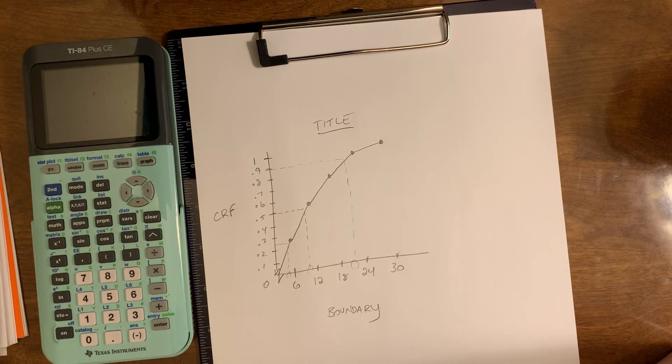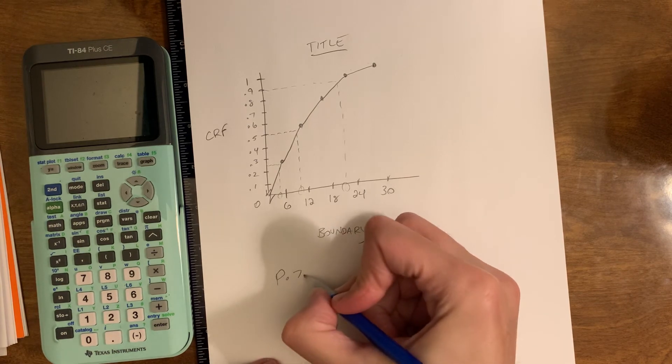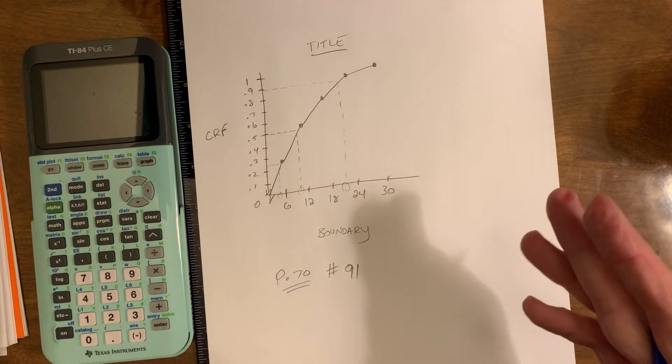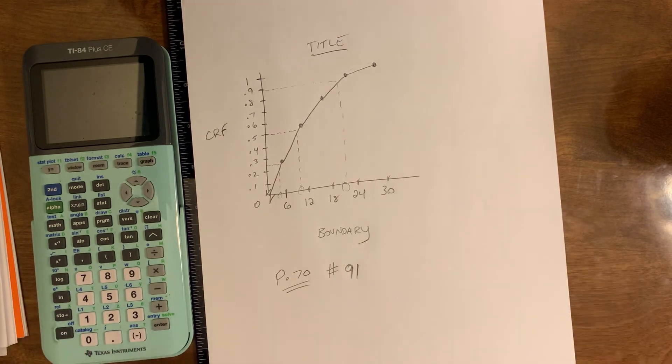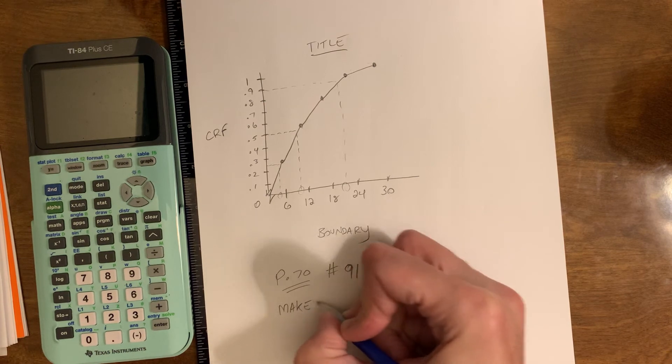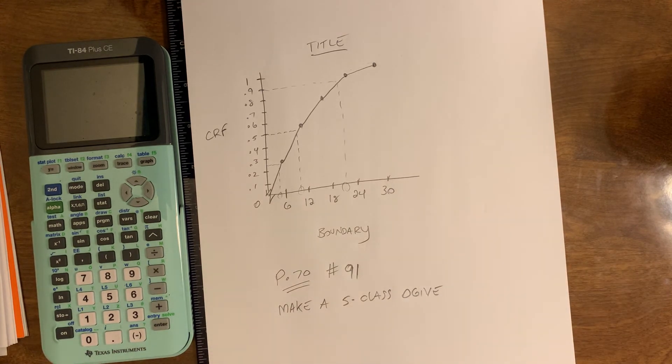Okay, that's basically it for how we make an ogive. Your homework is the following. On page 70, there's a problem number 91. Now, I'm attaching to this announcement a screenshot of the problem. I'm not interested in what it asks you to do. I want you to use the story and the data set to make a five-class ogive. If you have your textbook, then you'll see that it asks you to do other stuff. I don't want you to do that right now. So I'm attaching to the announcement a screenshot of the problem and its data set. And that's enough for right now.